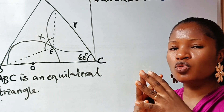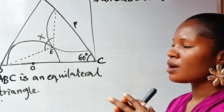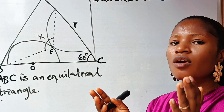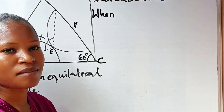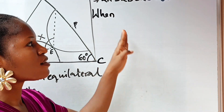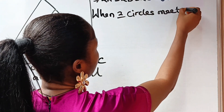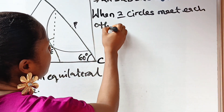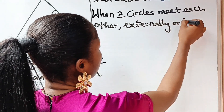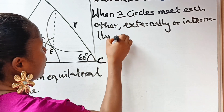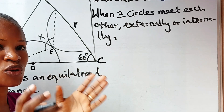Now there's a theorem we need to use. This theorem states that when two circles meet each other internally or externally, if you join their meeting points to the centers, a straight line is formed.